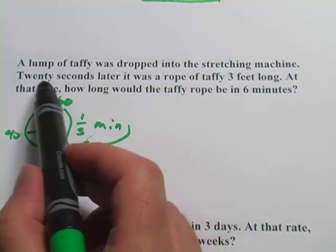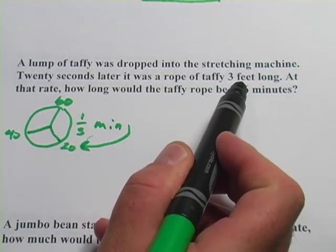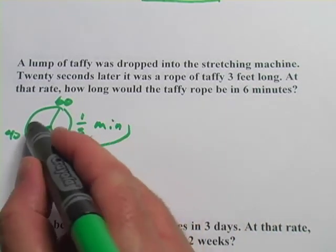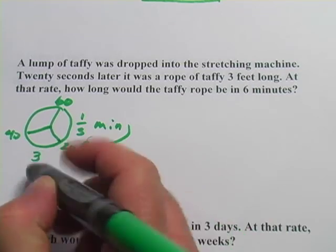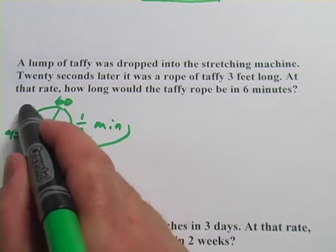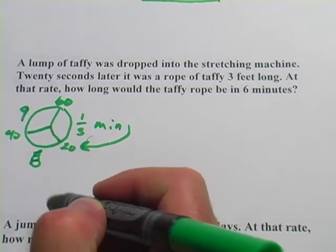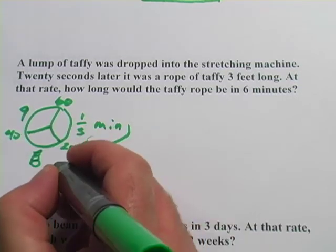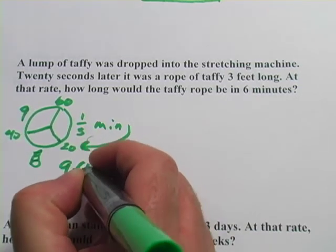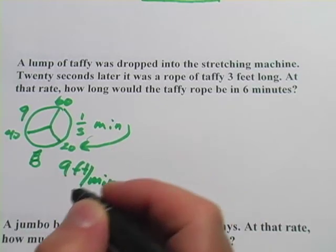So, if in 20 seconds it becomes three feet long, I guess I would think that in another 20 seconds it would become another three feet long, so it would be six feet. And in another 20 seconds, you'd add another three feet to that, and it would be nine feet. So that would be nine feet per minute. So every minute it would stretch out nine feet.